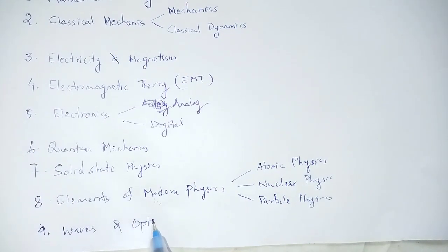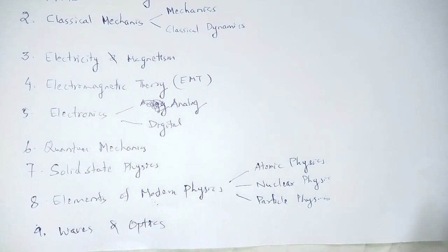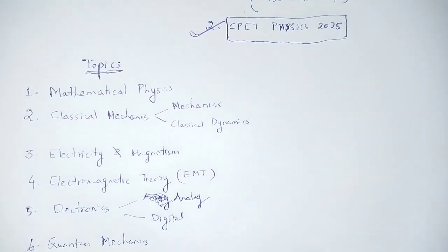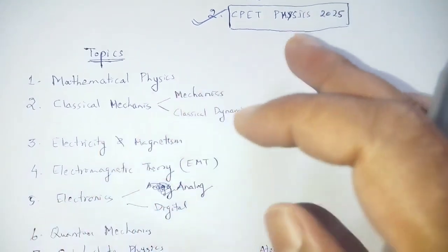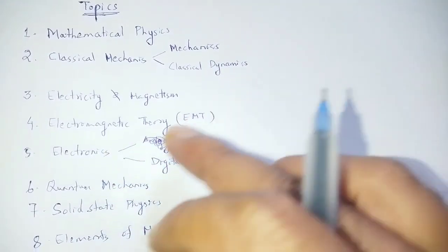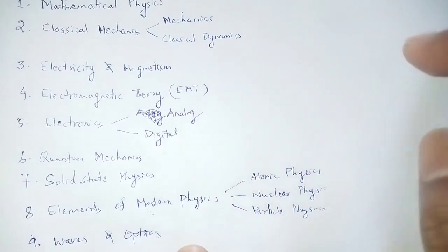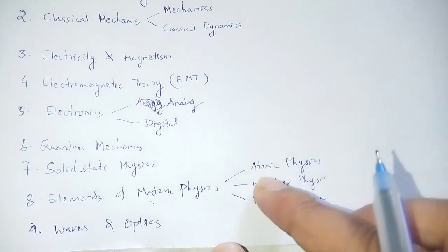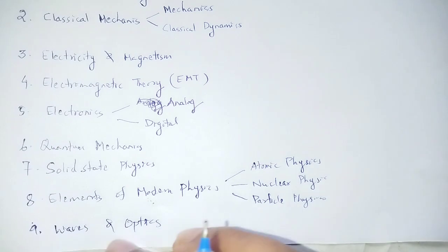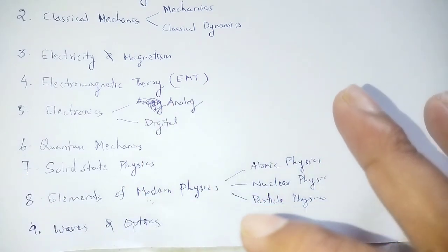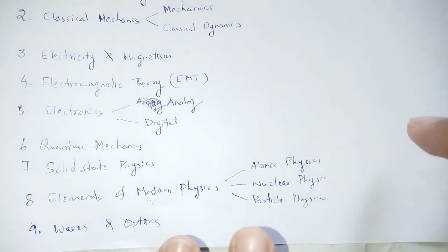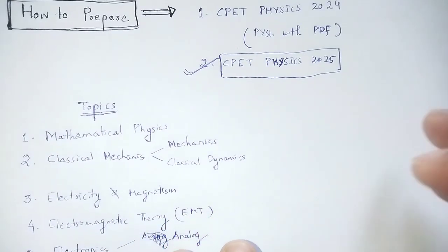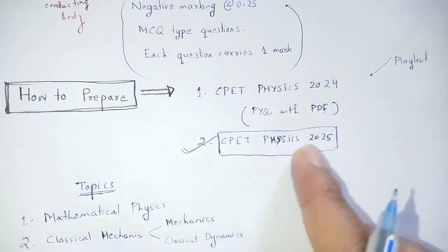These are all the topics from the Plus Three physics syllabus. The topics are: Classical Mechanics, Classical Dynamics, Electricity and Magnetism, Electromagnetic Theory, Electronics, Quantum Mechanics, Solid State Physics, Elements of Modern Physics, and Waves and Optics. For CPT Physics 2025, these 8 topic-related videos will be uploaded to the playlist.